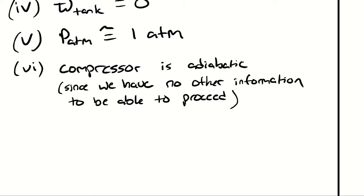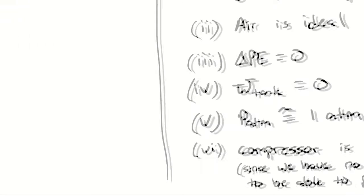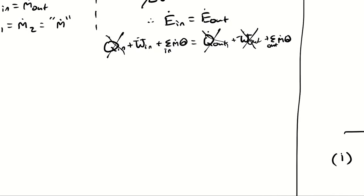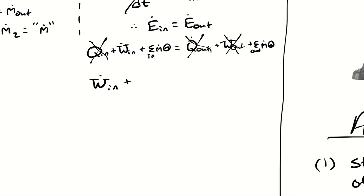We'll be doing this frequently: when we don't know enough about the operation of a device, we simplify by assuming it operates ideally. That assumption is in place unless we have enough information to dispute it. Then the power input equals the mass flow rate times the change in enthalpy plus change in kinetic energy.